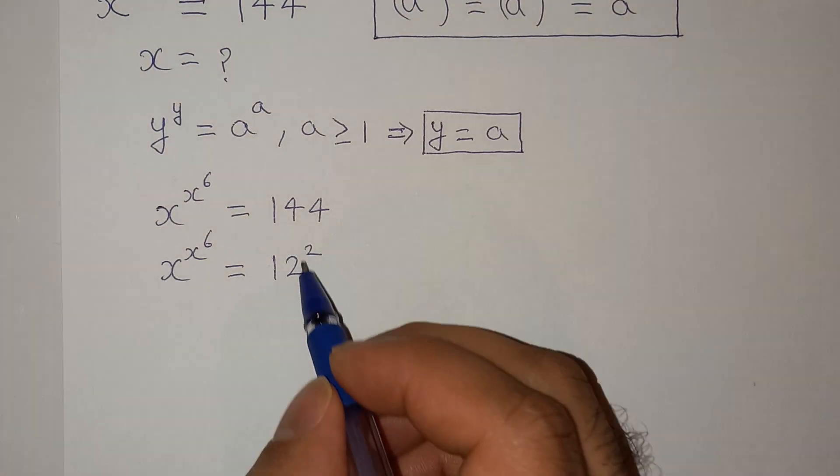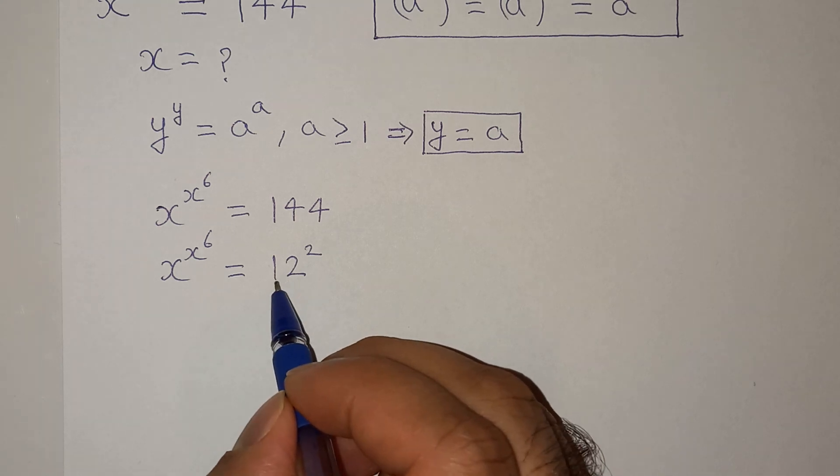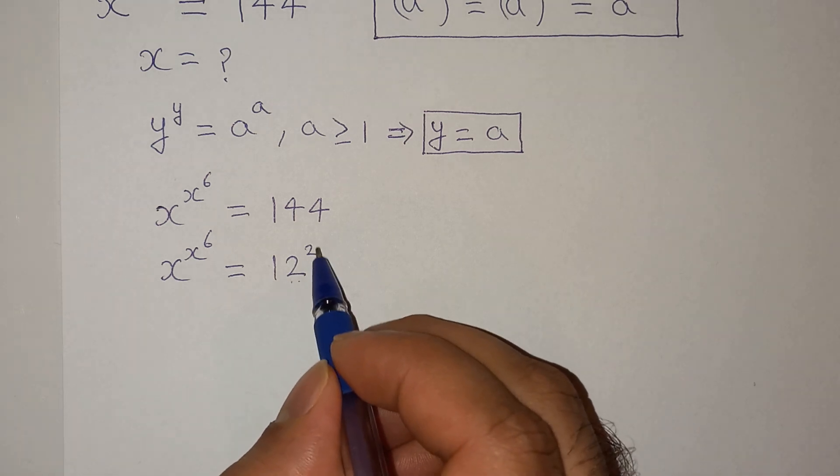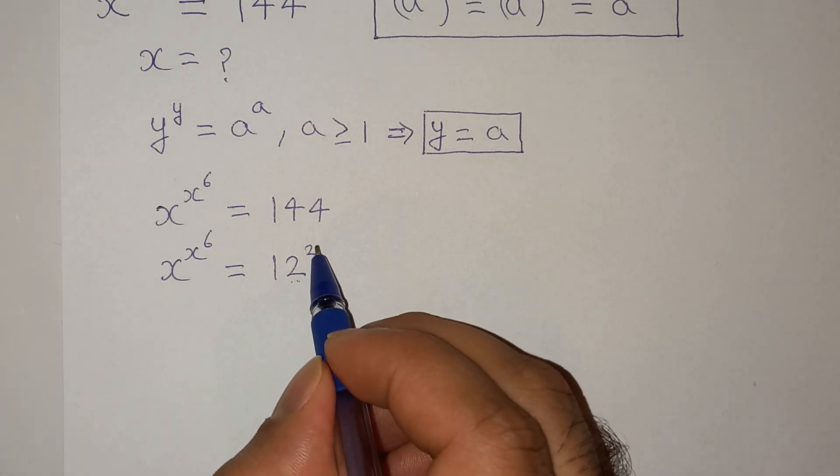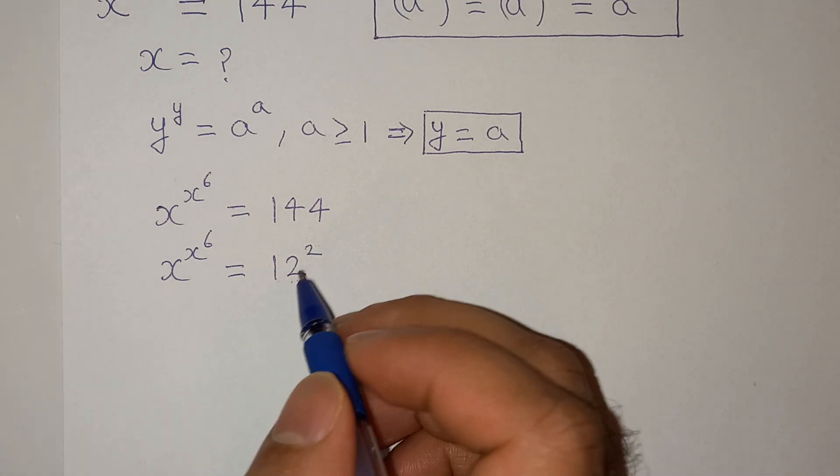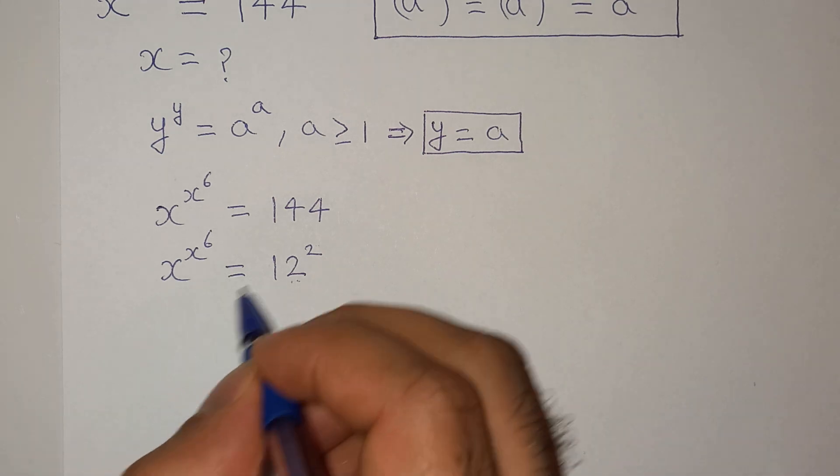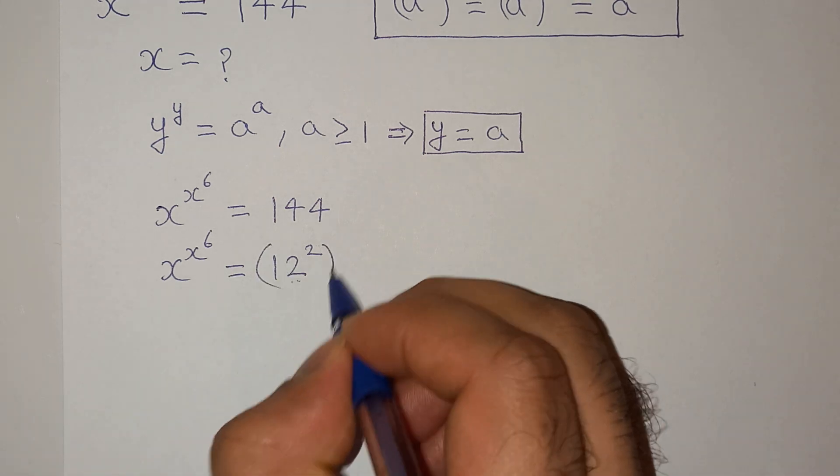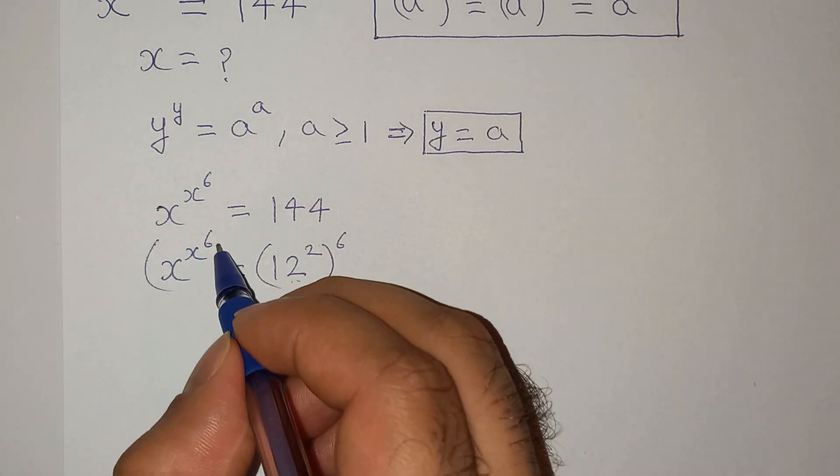So my idea is to make this base as 12 so the exponent should also be 12. As you can see the base is 12, I want to make this exponent 12. So for that I need to power 6 on both sides.